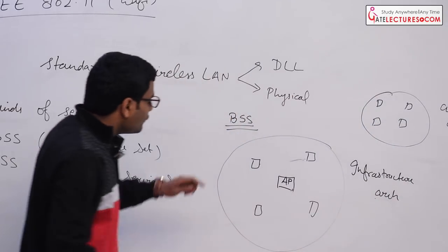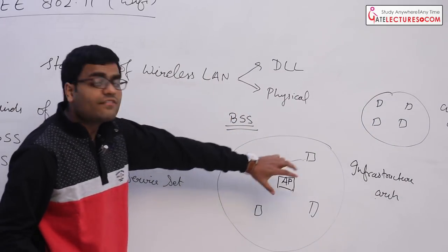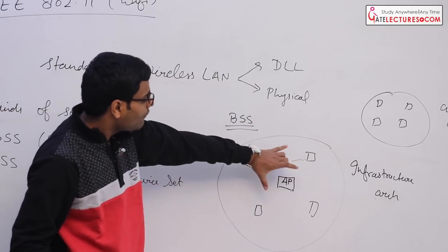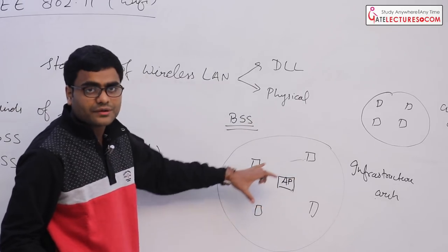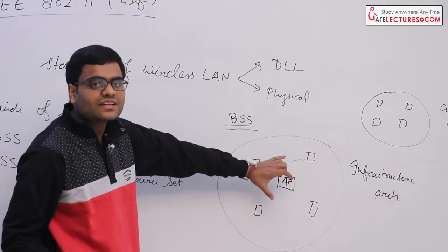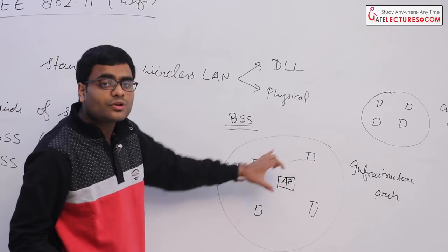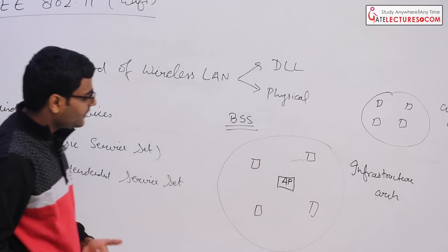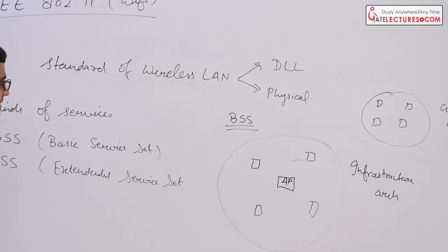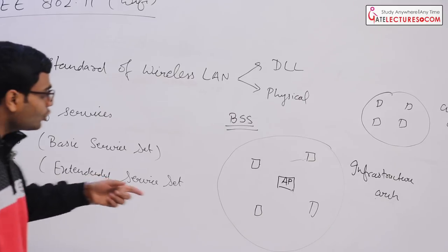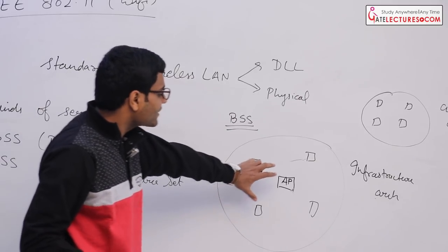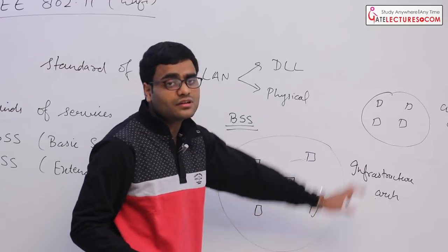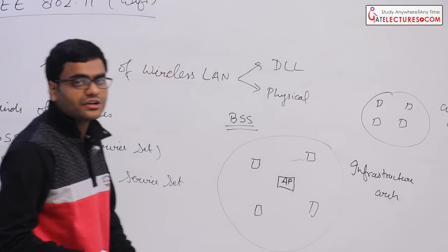Why do we have an access point? If we have a centralized base station, communication becomes easier. A centralized authority can communicate with all stations, making coordination simpler. If we have an access point we call it infrastructure architecture; otherwise it is an ad hoc architecture.